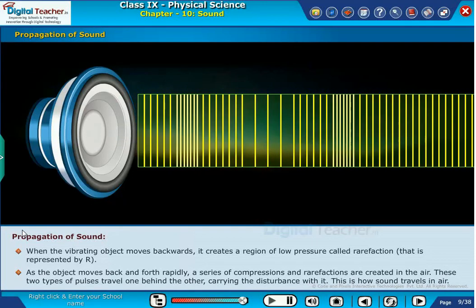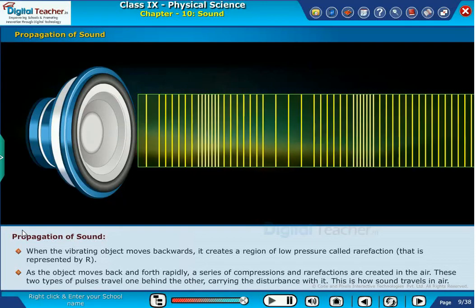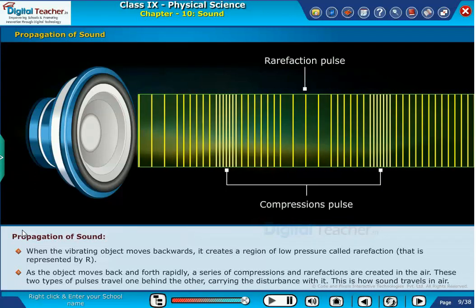As the object moves back and forth rapidly, a series of compressions and rarefactions are created in the air. These two types of pulses travel one behind the other, carrying the disturbance with it. This is how sound travels in air.